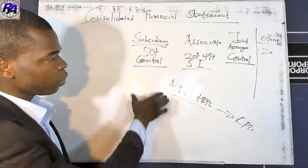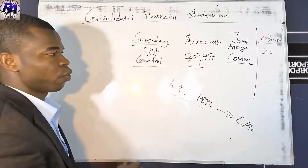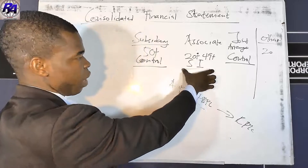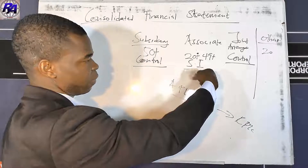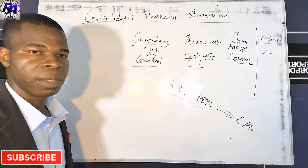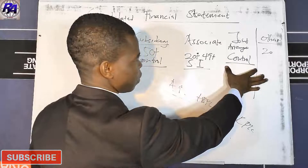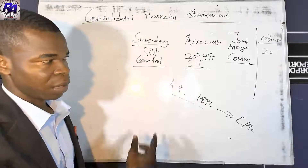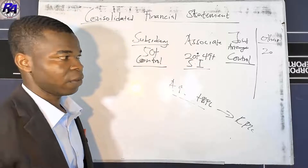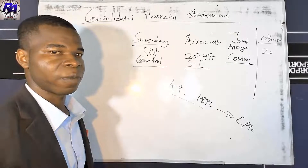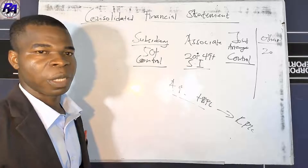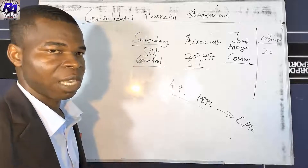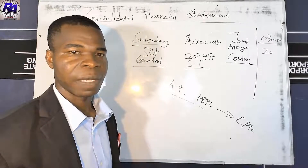How do we account for each? For a subsidiary, you are required to prepare full consolidated financial statements. For an associate, you are not required to prepare consolidated financial statements but must account for your interest using the equity method. For a joint arrangement, you prepare financial statements using either the equity method or other means — accounting for joint ventures or joint operations using various methods under IFRS 11.